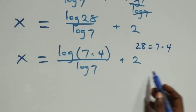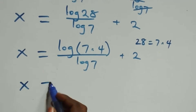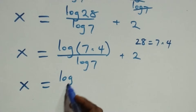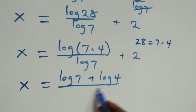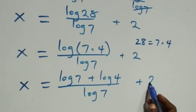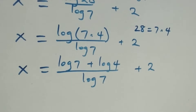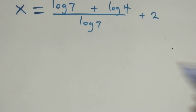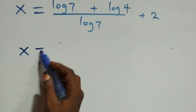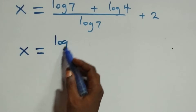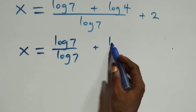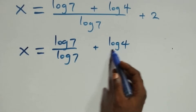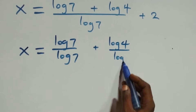This also follows the law of logarithms, and we can write it as x equals log 7 plus log 4 over log 7, then plus 2. We separate this into two fractions: x equals log 7 over log 7 plus log 4 over log 7 plus 2.